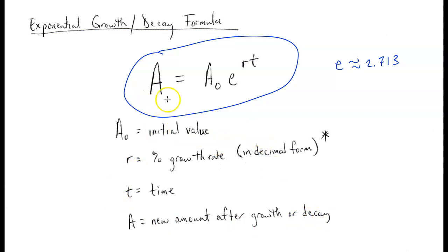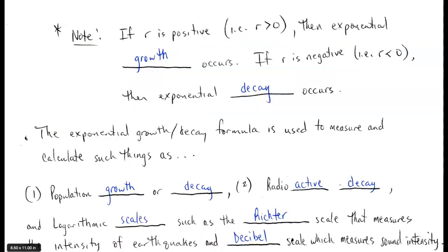A-sub-zero is the initial value, and we express the growth rate R in decimal form. Whenever R is positive, exponential growth occurs; if R is negative, then exponential decay occurs. The exponential growth and decay formula can be used to measure and calculate things such as population growth or decay, radioactive decay, and applications of logarithmic scales such as the Richter scale and decibel scales.